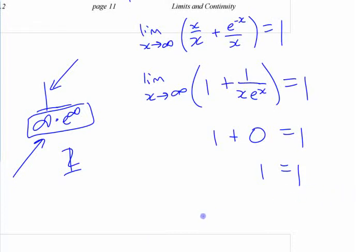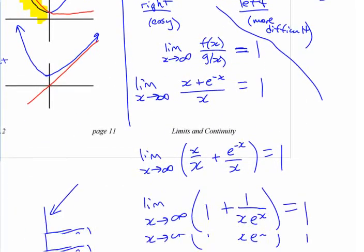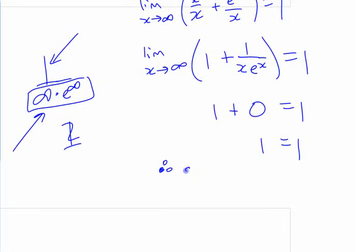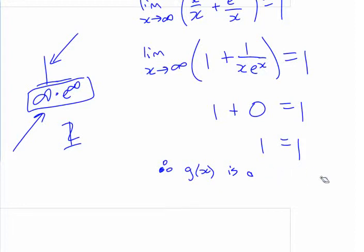That's it. You could write a nice 'therefore' statement at the end — using the three-dot symbol — saying therefore g(x) is a right end behavior model for f(x). That's the cleaner, more rigorous way to conclude it.